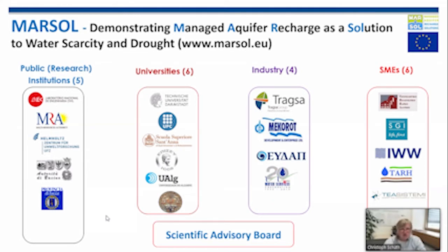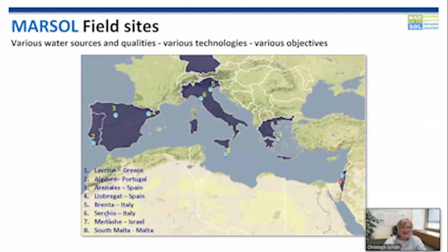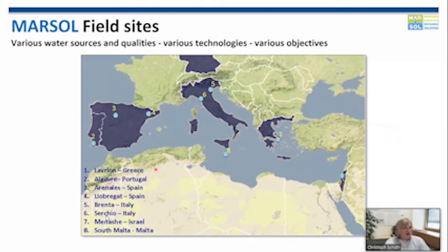Water companies were involved because they see this technology as a chance to prepare for future water needs. These include the water supply company of Malta, the water supply company ADAP of Greece — responsible for all water and wastewater issues of that city — and a water supply company of Israel. The project had field sites demonstrating how managed aquifer recharge can be used, shown on a map of Southern Europe, the Mediterranean, and Northern Africa. In total there were eight different field sites.